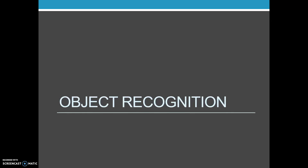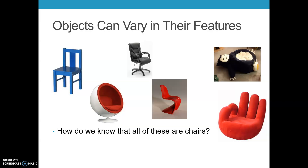Now we're going to take this one step further. We've talked about templates, patterns, and features. Now we're going to talk about how we recognize objects in general. One of the things that's tricky about object recognition is that objects can vary in their features.